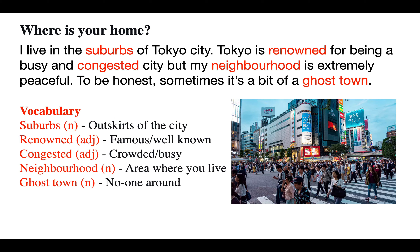So what's the vocabulary that I've used there? Suburbs is a noun — the suburbs are the outskirts of the city, the edge of the city, not the city centre. Renowned is an adjective; it means that something is famous or well known for something. Congested is an adjective, and that means crowded or busy.